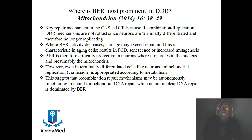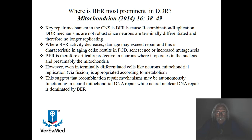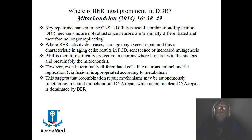That leads to some interesting sequelae. Where BER activity decreases, damage can exceed repair — and that's characteristic of aging cells. It can result in programmed cell death like apoptosis, it can result in senescence — the slowing down and aging of the cell — or it can actually increase mutagenesis. Why? Because your BER activity decreases, you're not fixing the damaged bases in the brain. Since that's your main repair game in the brain, you lose that with aging — the activity slows down, probably also by overuse due to damage inflicted episodically, depending on the individual involved.